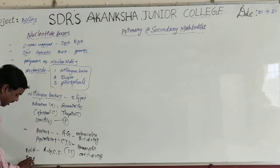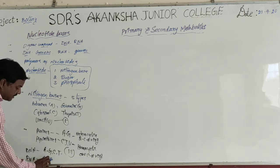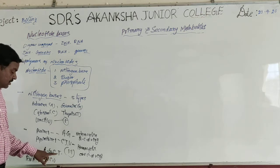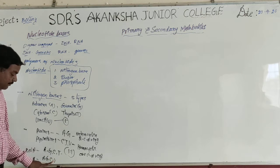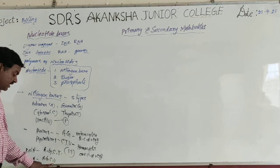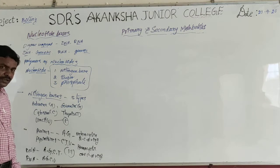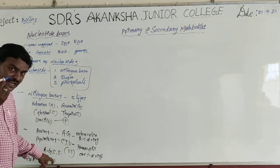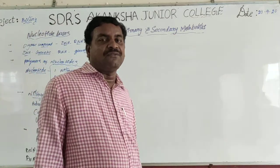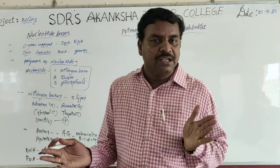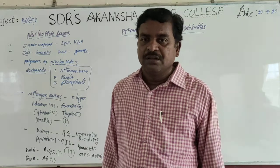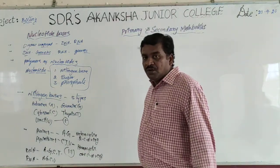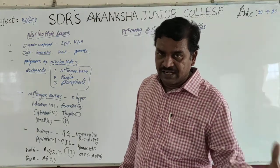The nitrogen bases present in RNA are A, G, C, and U. A, G, C are common with DNA. But Thymine present in DNA is replaced by Uracil in RNA. Very, very important: Uracil is absent in DNA; Thymine is absent in RNA. Three nitrogen bases are common in DNA and RNA — Adenine, Guanine, and Cytosine. One base is different: Thymine in DNA versus Uracil in RNA.